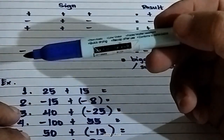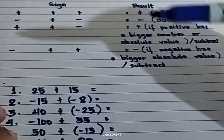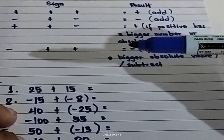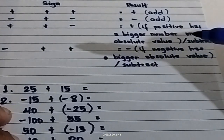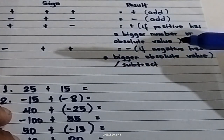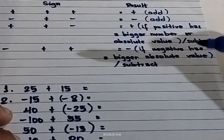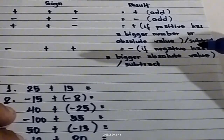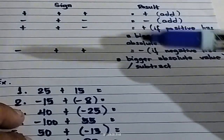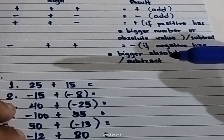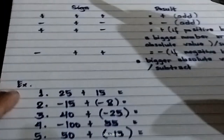What if there is negative plus positive? The answer is equal to negative if the negative integer has a bigger absolute value or bigger number. This follows the same rule as the third case.